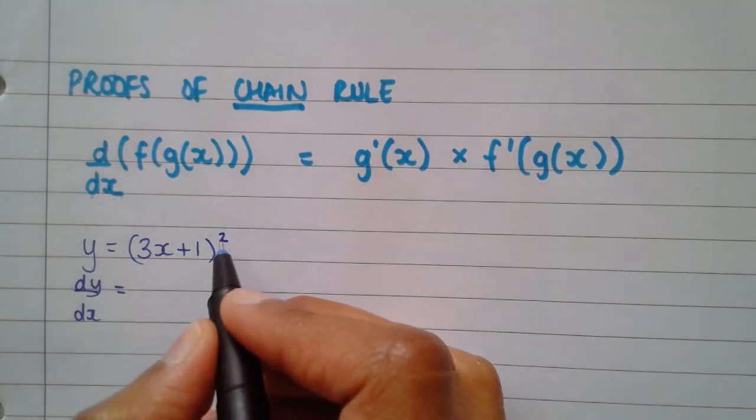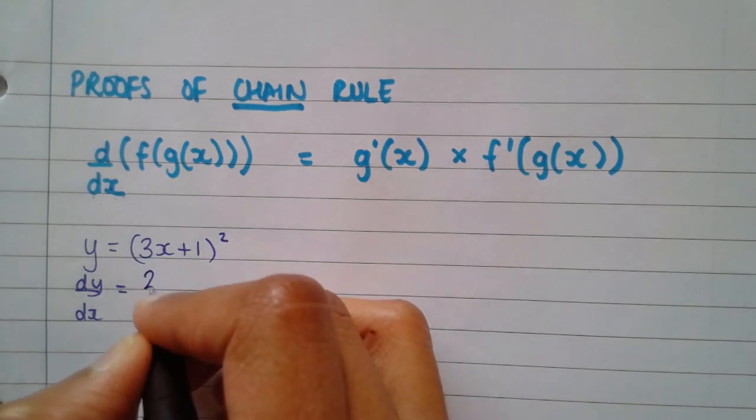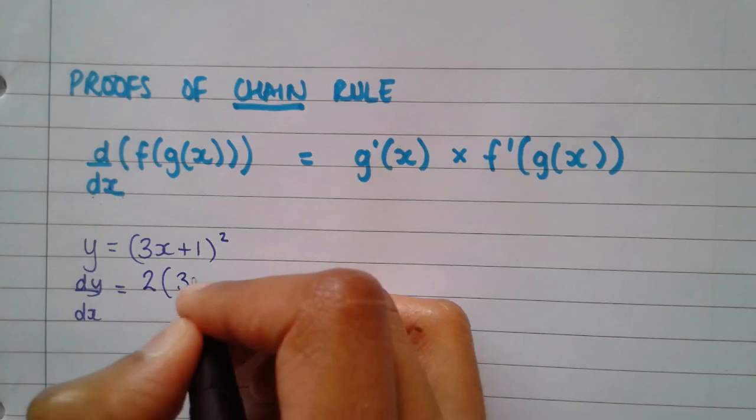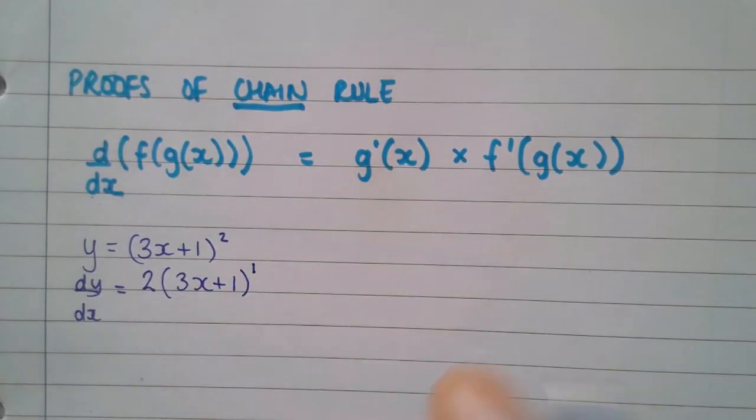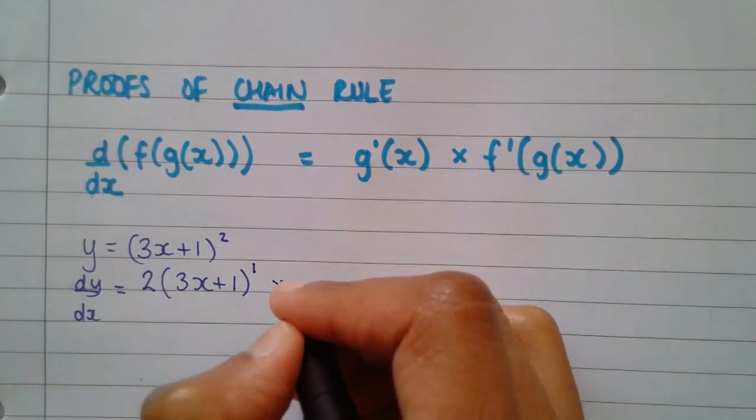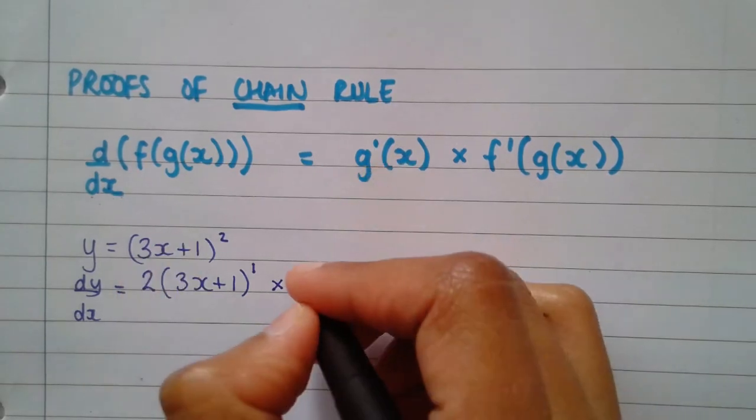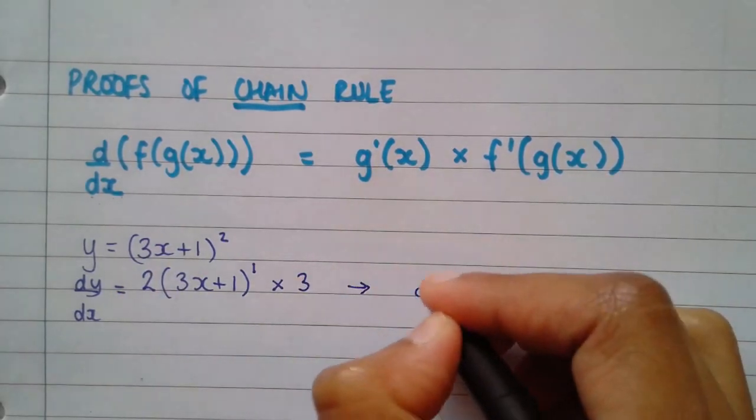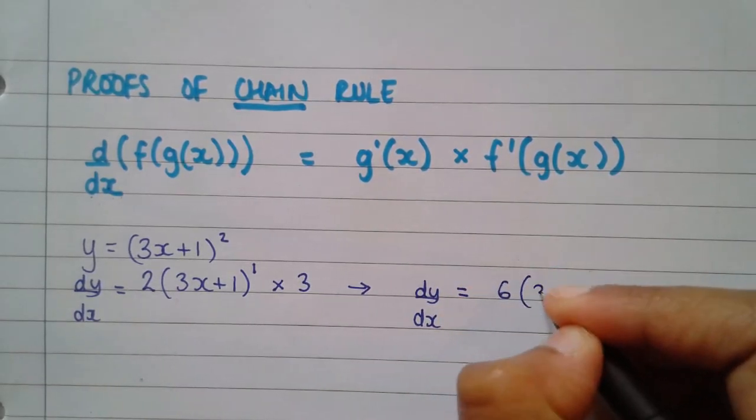And that is, we differentiate the outside as usual, so we bring the power forward and we keep the inner function as it is, reduce the power by 1, which is the f of g of x. And then we times it by the inner function's derivative, which is just 3, which gives us the answer 6 bracket 3x plus 1.